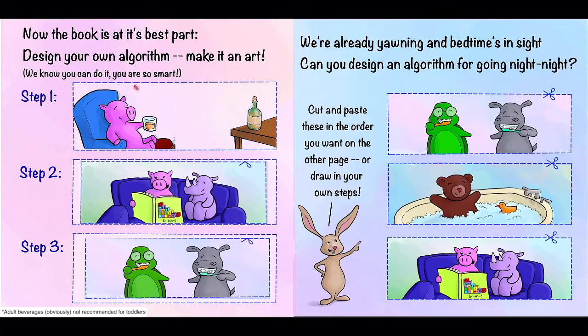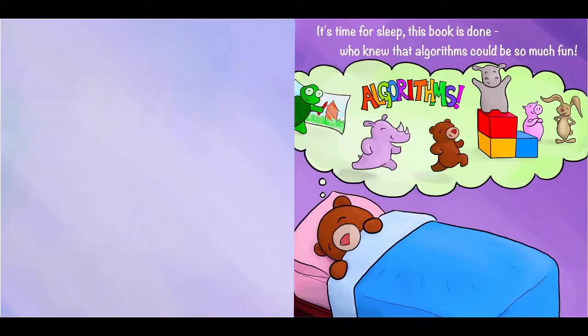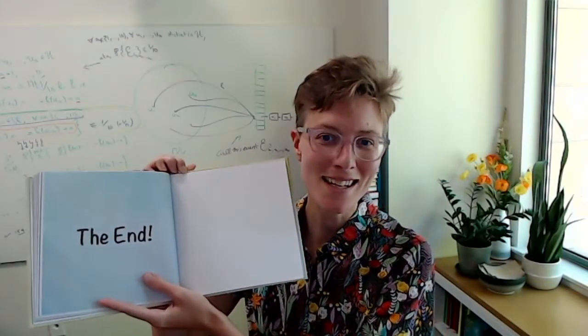So there we go. Here's Pig having a nightcap. Moving on. So we have this blank page here, which was the back of where we would cut things out of. And then the next page is, it's time for sleep. This book is done. Who knew that algorithms could be so much fun? And here we have Bear going to sleep and dreaming about all of the fun that they had with algorithms. The end.